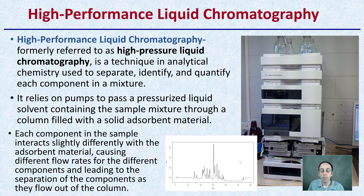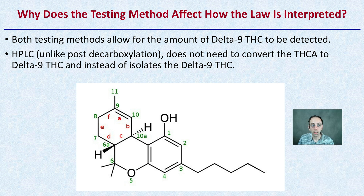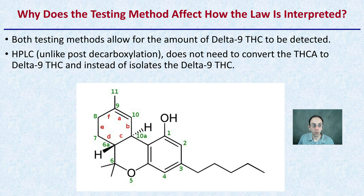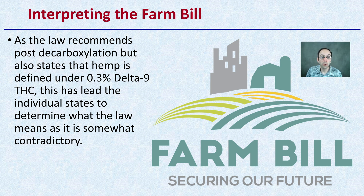If you run two different liquids, they'll give you two different peaks — two different signatures. So why does the testing method affect how the law is interpreted? Both testing methods allow for the amount of delta-9-THC to be detected. However, HPLC, unlike the decarboxylation step, does not need to convert the THCA to delta-9-THC — instead it isolates the delta-9-THC directly. The Farm Bill recommends post-decarboxylation but also states that hemp is defined as under 0.3% delta-9-THC.